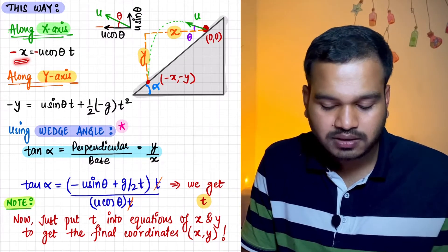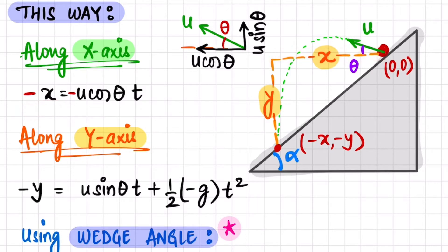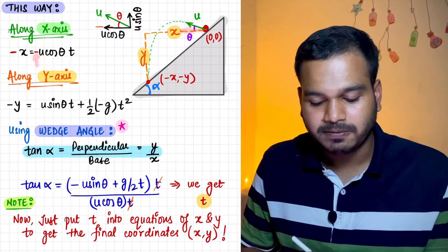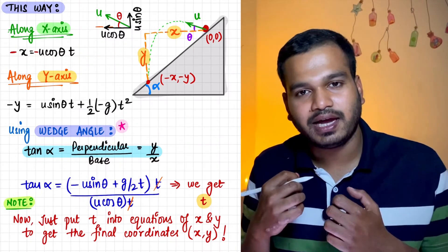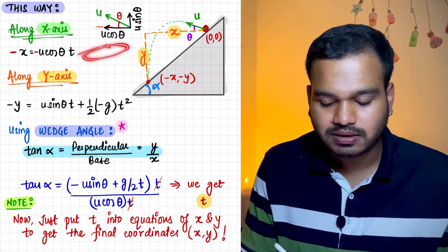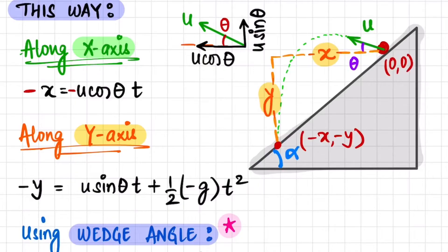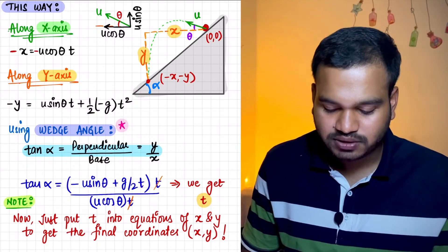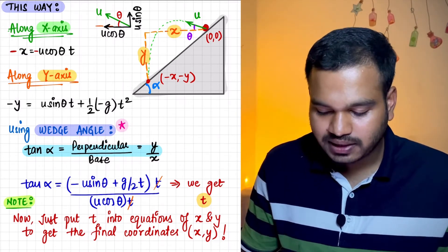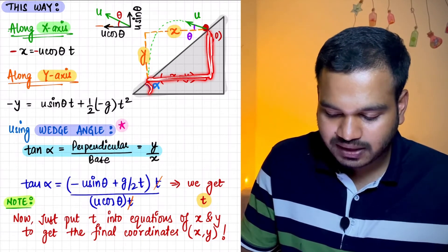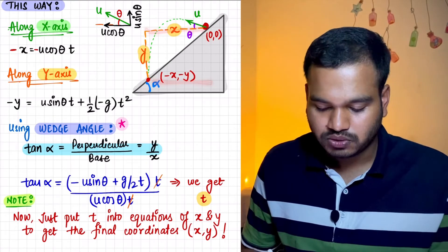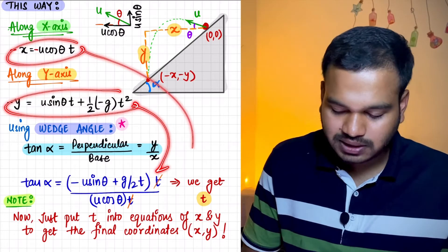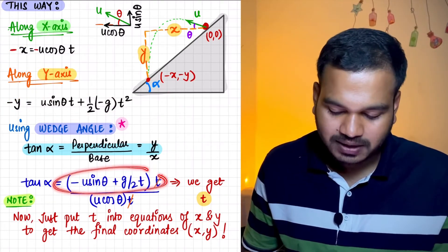In the x-direction (noting the particle moves in the negative x-direction): −x = −u cos(theta) · t, since acceleration along x is 0. In the y-direction: y = u sin(theta) · t − ½g·t². Then apply the wedge angle twist: tan(alpha) = perpendicular/base = y/x. Place the y-equation over the x-equation; one t cancels as before, giving a solvable equation for time of flight.